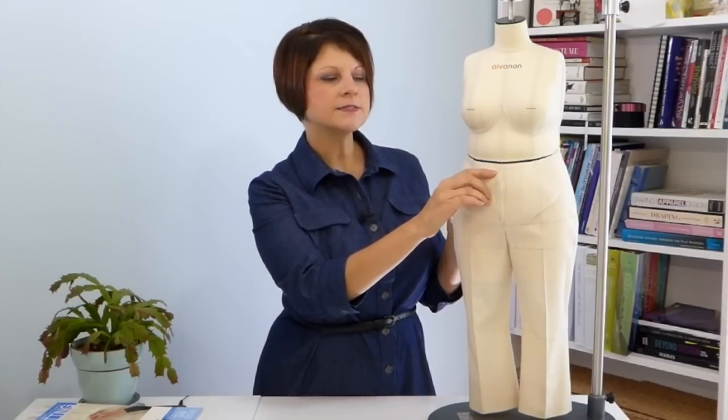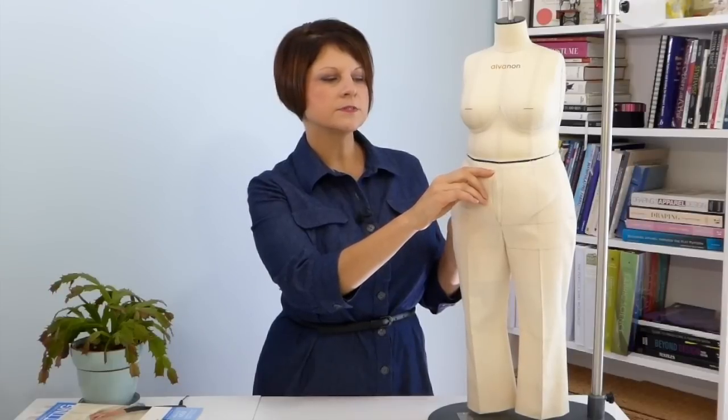The other measurement that you can take to determine how much extra length you need in your front rise is this distance here, this distance from the waistline of the pant to the waistline of your natural position on your body. This is going to be the extra length you need to add to your pattern in order to accommodate the prominence of your particular tummy. Now we're going to move on to showing you how to make the pattern adjustment.